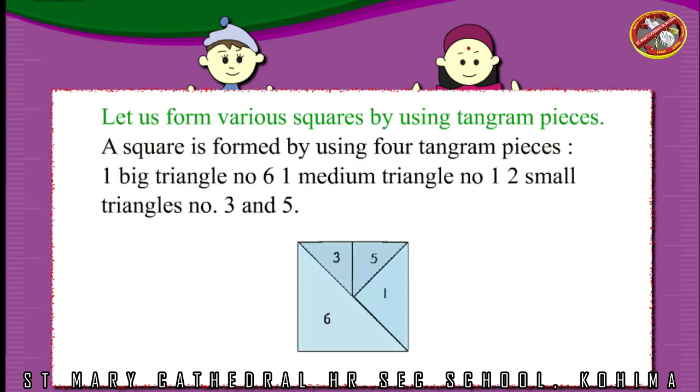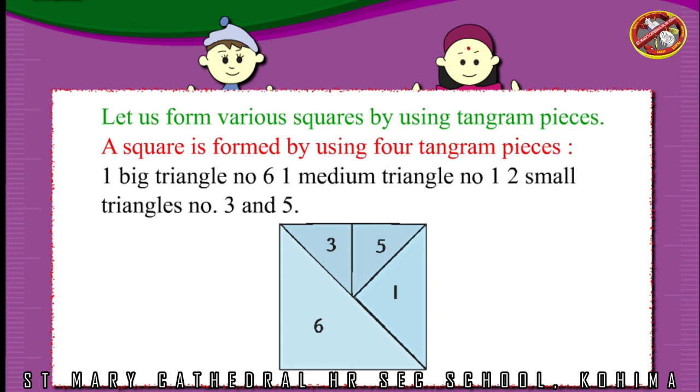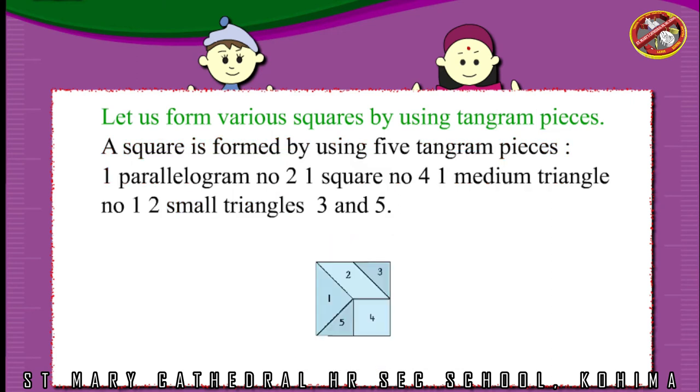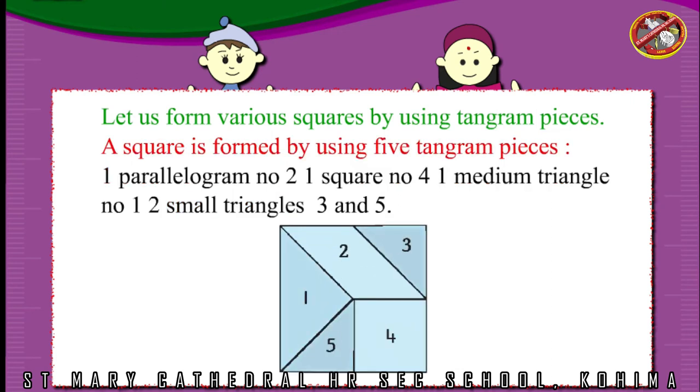A square is formed by using four tangram pieces: one big triangle number six, one medium triangle number one, two small triangles number three and five.